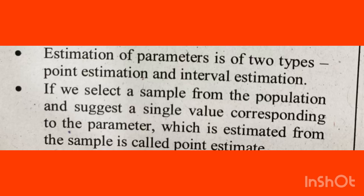Estimation of parameters is of two types: point estimation and interval estimation. We select a sample from the population — the population function is the estimate. If we select a sample of a population and suggest a single value corresponding to the parameter, it is called a point estimate.